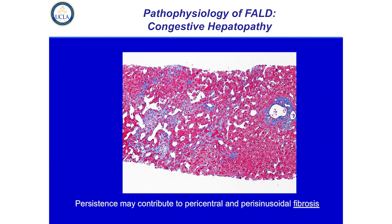And then over time — the blue here on this trichrome stain highlights fibrosis, which typically starts pericentral and perisinusoidal and can expand. Over time, we know fibrosis is one of the main things that we worry about and try to accurately stage in Fontan patients.